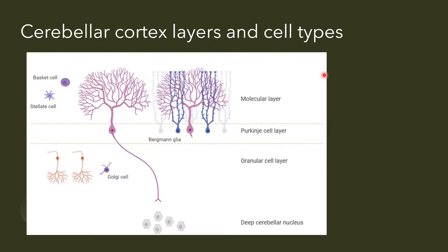Now let's talk about the cerebellar cortex itself. It has very nice and easy-to-recognize layers. The three main layers are the molecular layer, the Purkinje cell layer, and the granular cell layer. Also depicted here are the cells within the deep cerebellar nuclei.